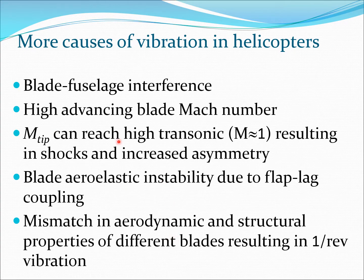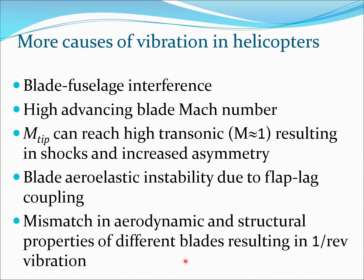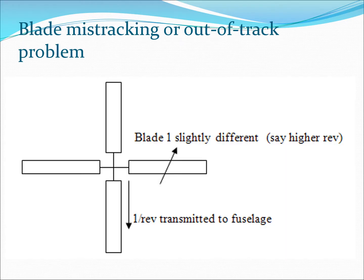To summarize: we talked about the interaction between the blade and the fuselage, the high Mach number on the advancing side, and the fact that the tip Mach number can reach high transonic speeds resulting in shocks, further increasing the lack of symmetry. There are also aspects of blade instability due to flap-lag coupling. Finally, if the blades do not all have the same properties, this leads to vibration — very similar to a car having different tire pressures — which is a source of one-per-rev vibration.